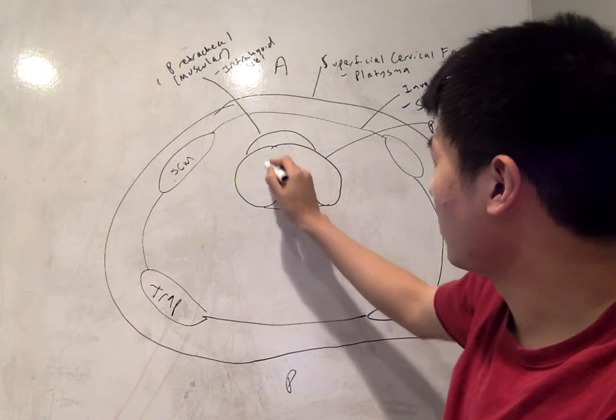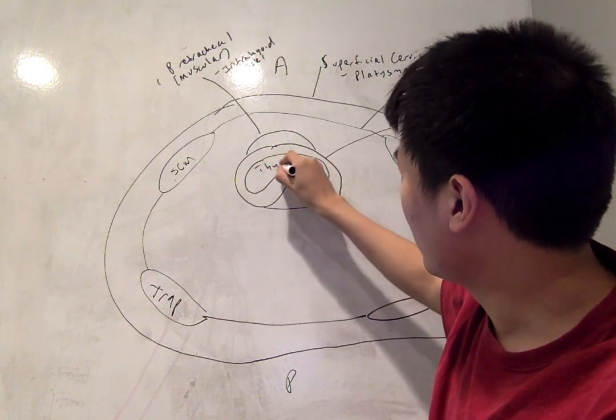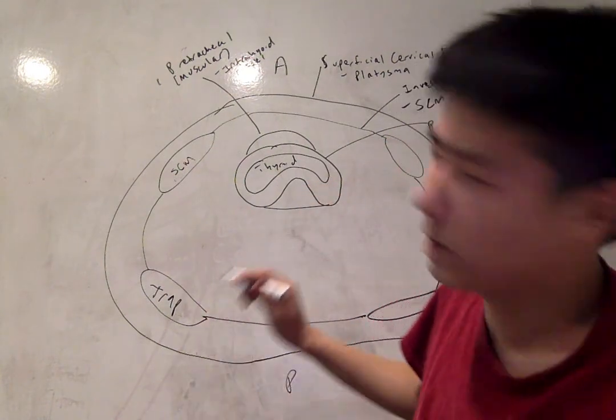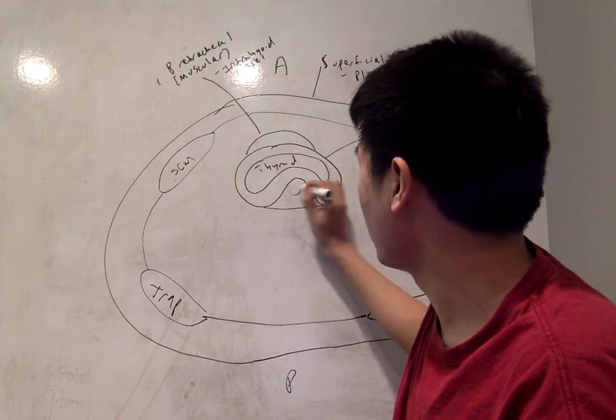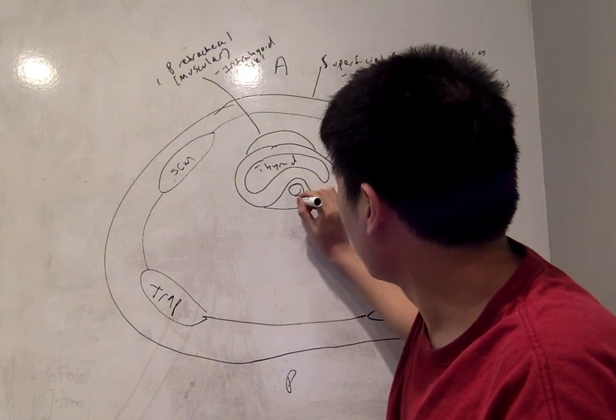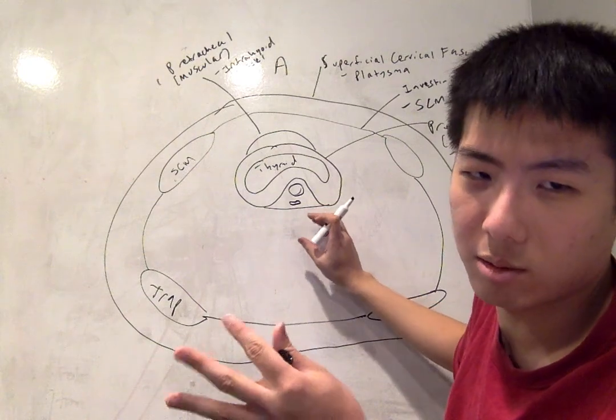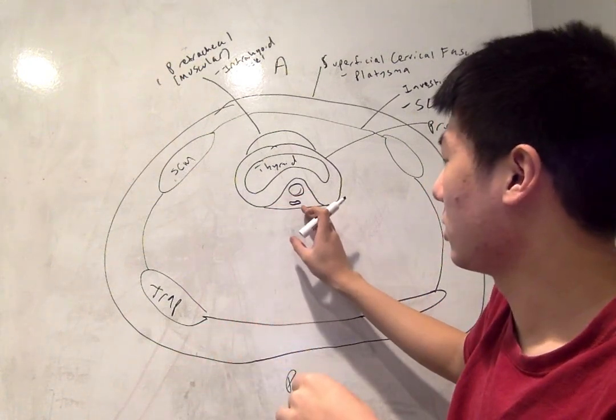Specifically, this would be the thyroid right here. And the trachea and esophagus is going to be in this pocket down here. The larger circle that I'm drawing is the trachea, which is anterior to the smaller compressible structure of the esophagus.